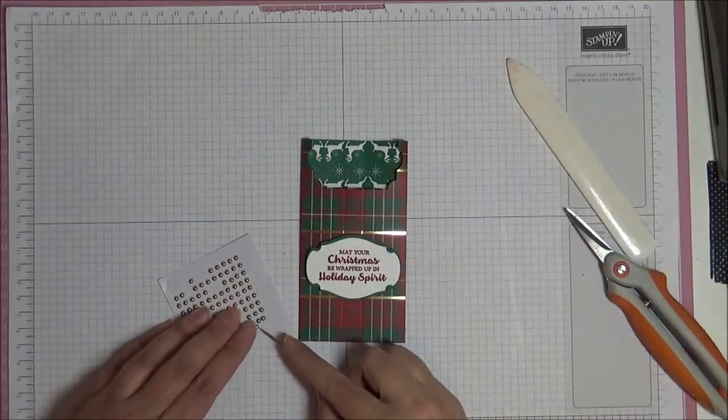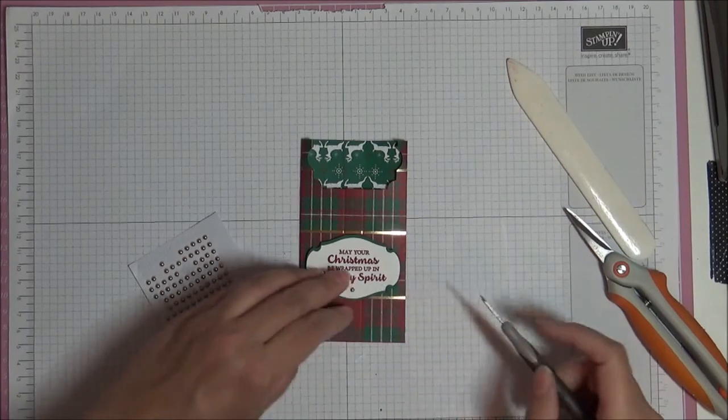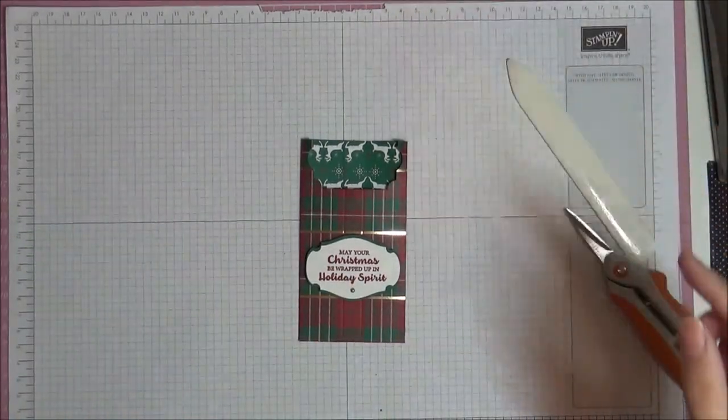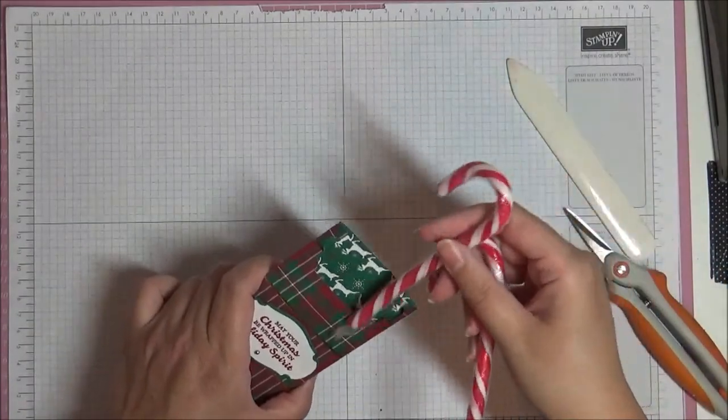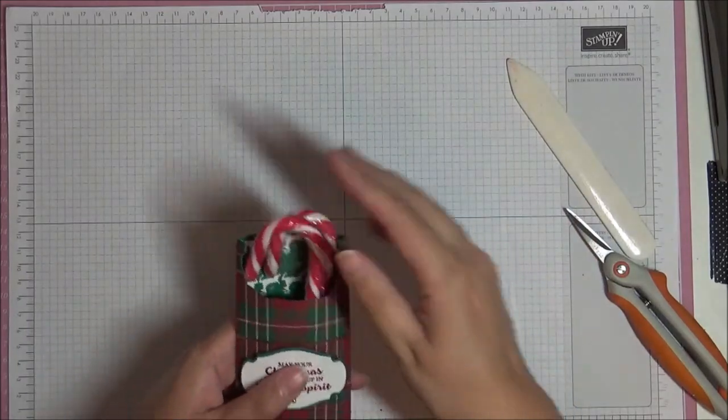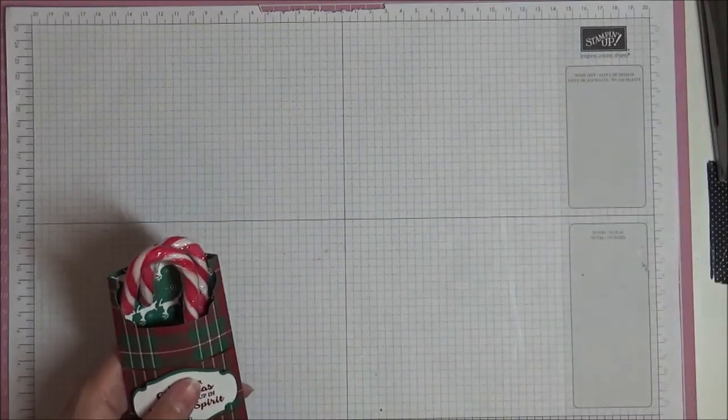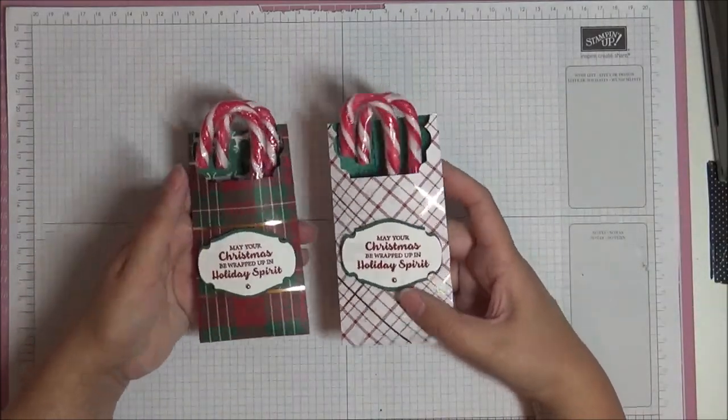Then finishing touches, I've got some metallic pearls and I'm just going to put one at the bottom there, lovely. So put in our candy canes, very important. There we go, move the stuff out the way and there you have two versions, light and dark. Tell me which one you like better. I think they're both cute.